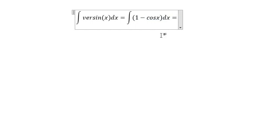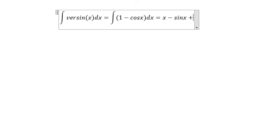Now, this is so simple right now. The integral of number 1 is about x. The integral of cosine x is about negative sine x plus c. And this is the final answer.